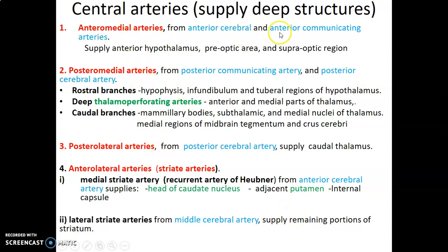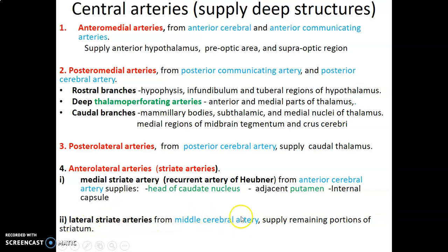To summarize the central arteries: anterior medial from anterior cerebral and anterior communicating; posterior medial from posterior communicating and posterior cerebral; posterior lateral from posterior cerebral; anterior lateral which are striate arteries, divided into medial striate — the recurrent artery of Heubner supplying caudate, putamen, and internal capsule — and lateral striate from middle cerebral arteries supplying the remaining portions of the striatum.